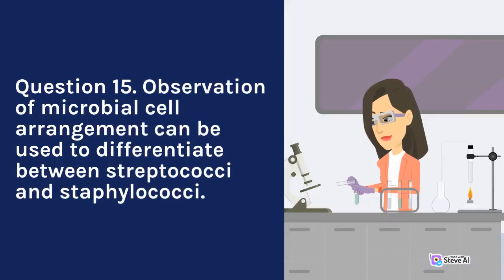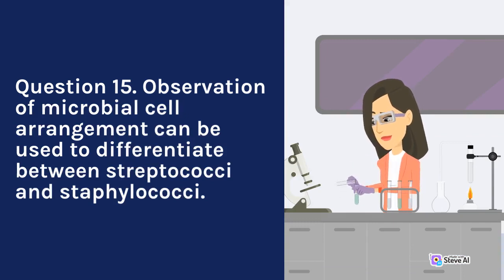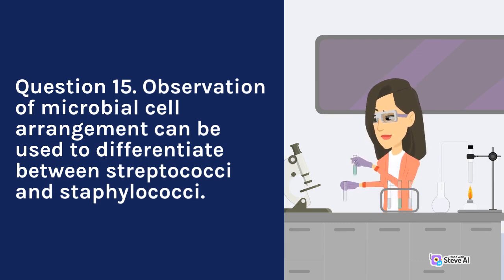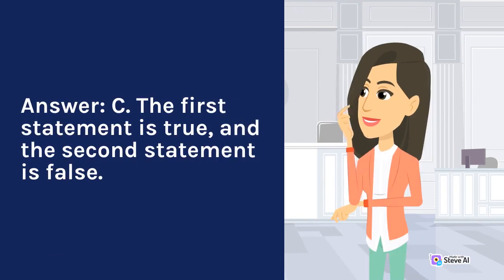Question 15. Observation of microbial cell arrangement can be used to differentiate between streptococci and staphylococci. A. Both statements are true. B. Both statements are false. C. The first statement is true, and the second statement is false. D. The first statement is false, and the second statement is true. Answer: C. The first statement is true, and the second statement is false.